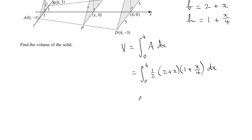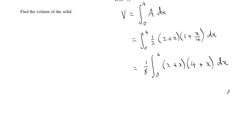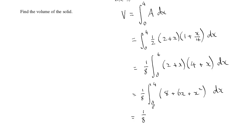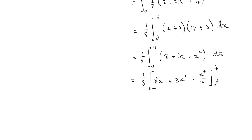Bringing the ¼ out gives a factor of ⅛ in front, and multiplying through by 4 gives the integrand (8 + 6x + x²). Integrating each term separately: 8x + 3x² + x³/3, evaluated from 0 to 4. Plugging in x = 4 on your calculator gives 38/3.